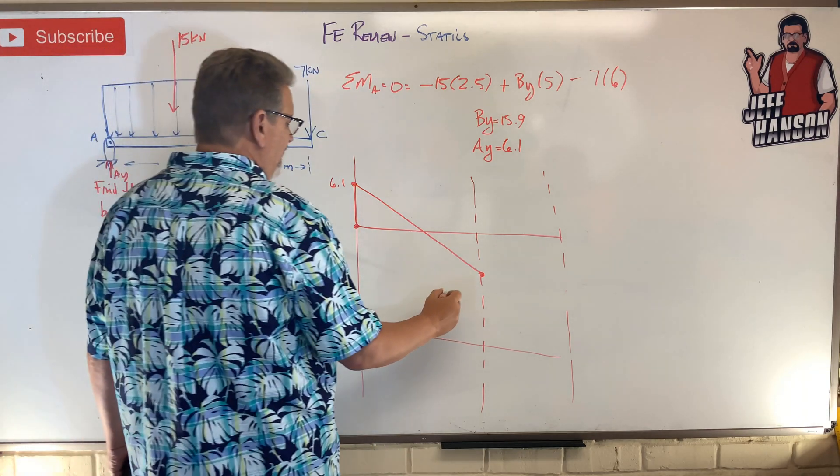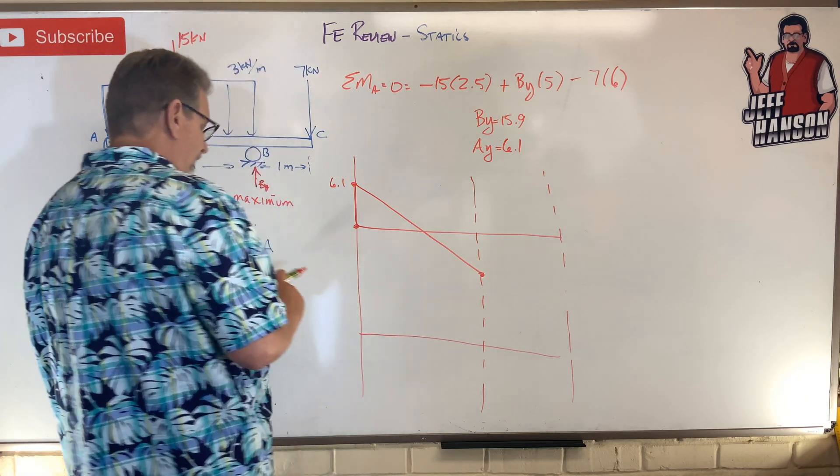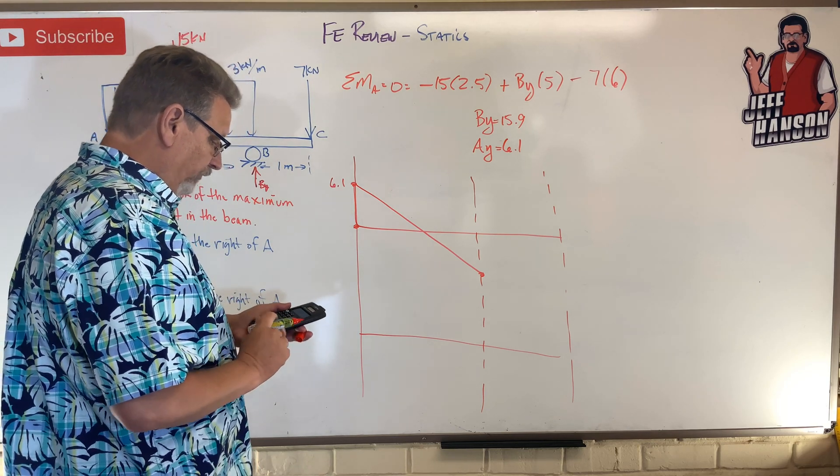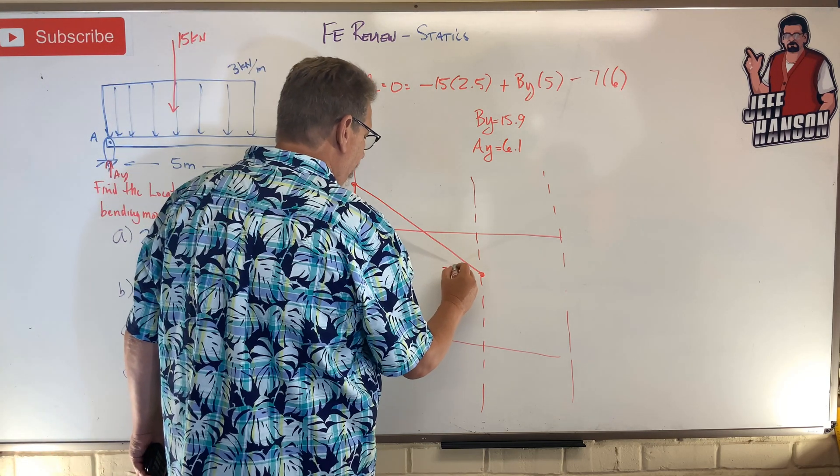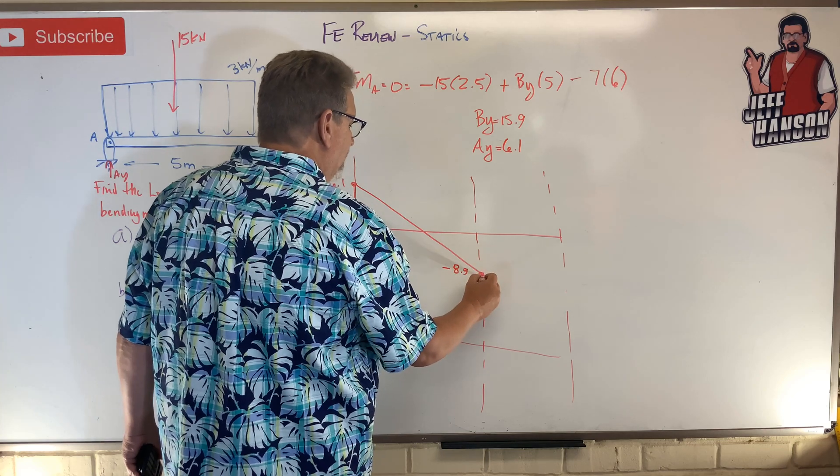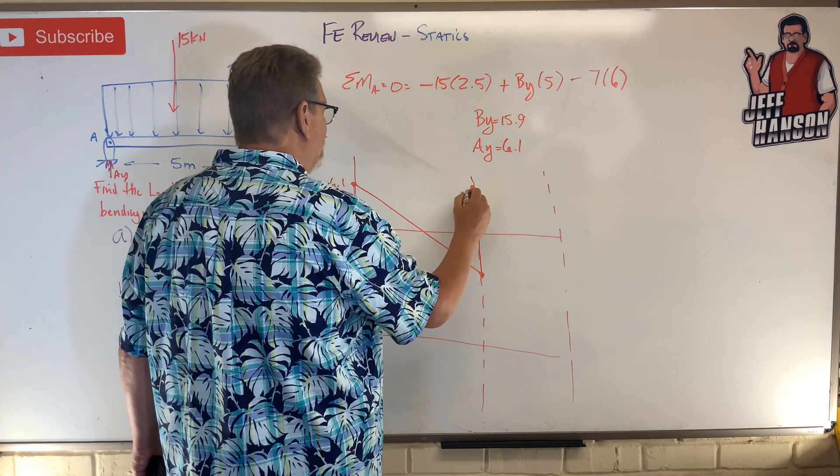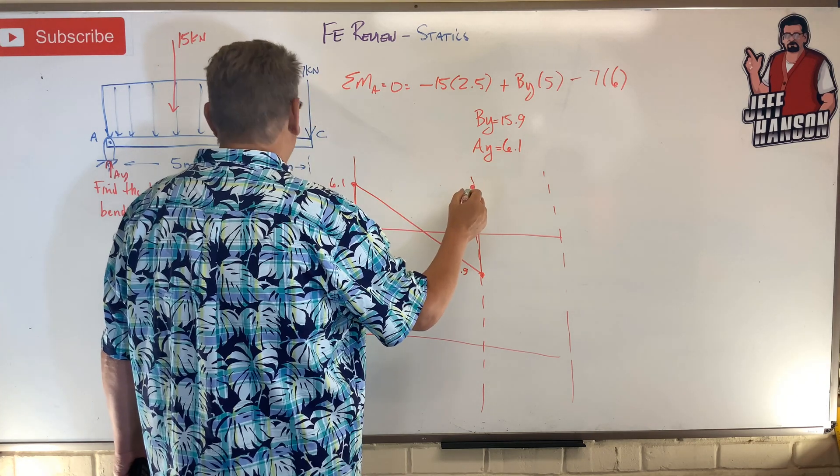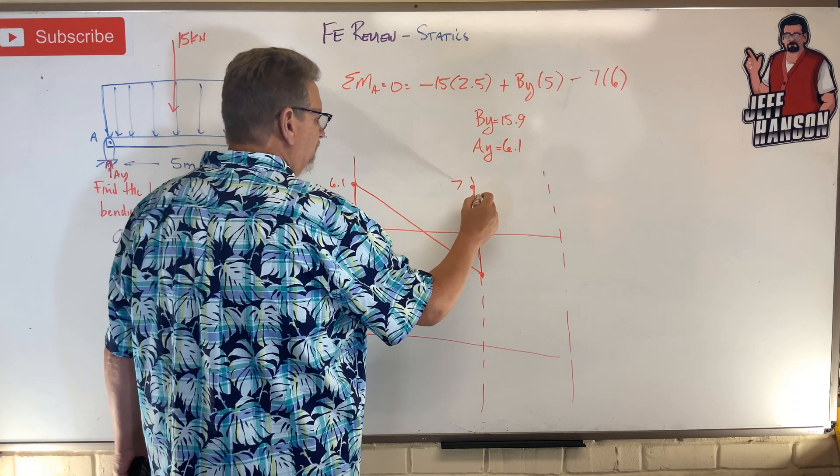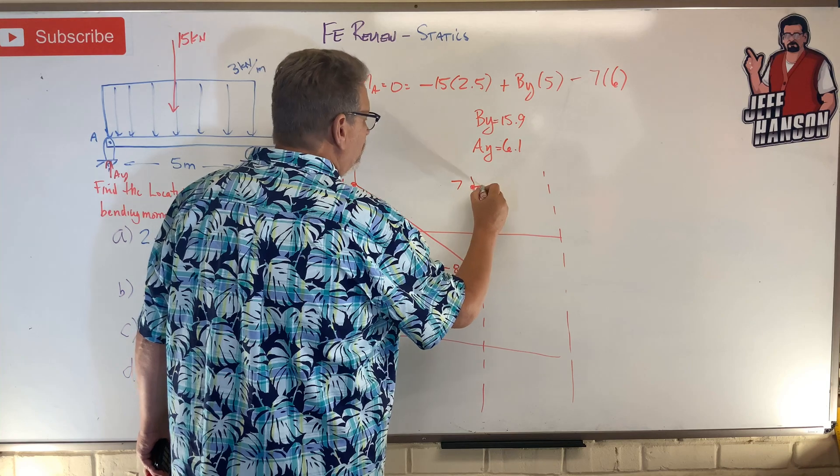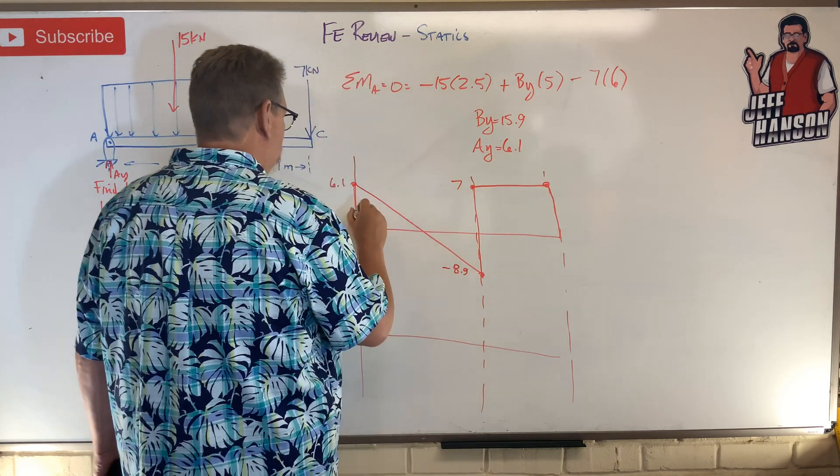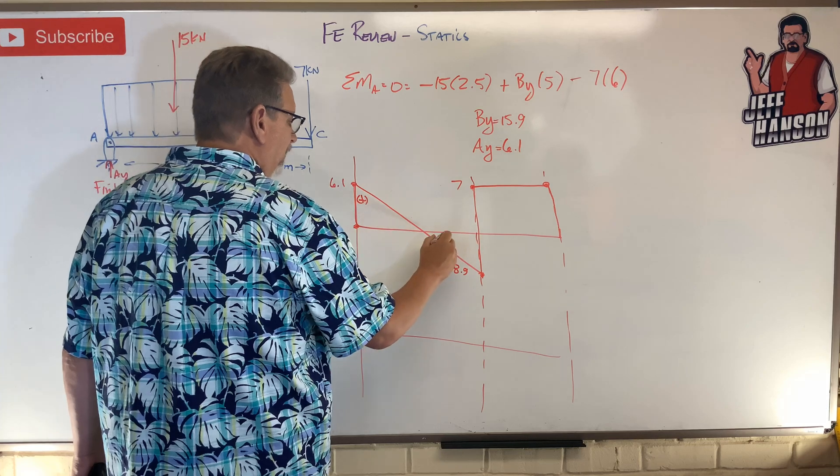Now where am I down here? 6.1 minus 15 equals negative 8.9, and then jump up 15.9. That's going to take me to about 7, won't it? And then from there, no change, no change, no change, bam, back to zero. So I got plus, plus there, minus there, and plus there.